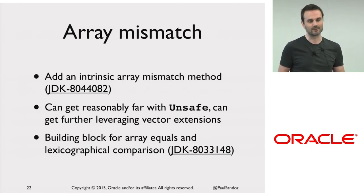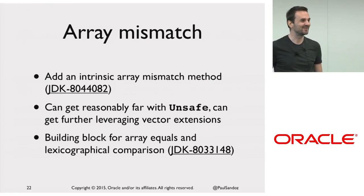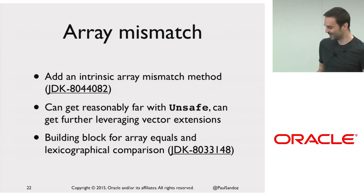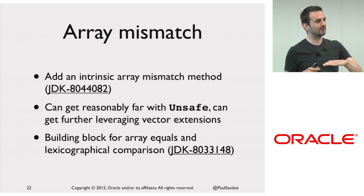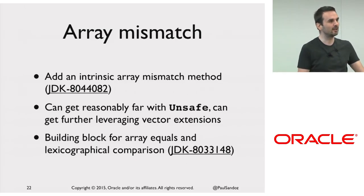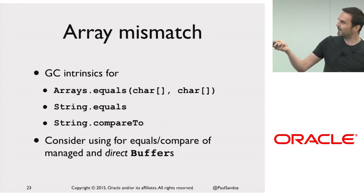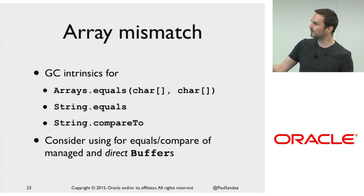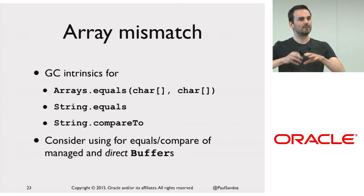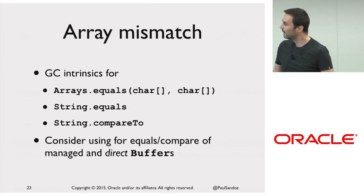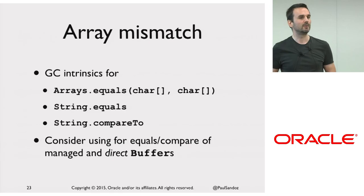ARM64 I think is okay, but there are other architectures coming where the principle still applies. If we have this mismatch method, we can GC particular intrinsics for arrays.equals for characters, String.equals, and compareTo — perhaps we can GC those, making it more general and reusable. Then we can consider using it for equals and compare of managed and direct byte buffers, so we can improve those cases too.